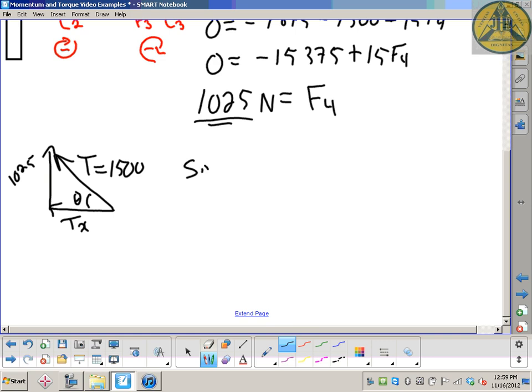So the sine of theta equals F4 over T, the way I've labeled it in the diagram. So sine of theta equals 1025 over 1500. So do that division and do inverse sine. And it's the inverse sine of 0.683. Inverse sine of that, and you get 43 degrees.